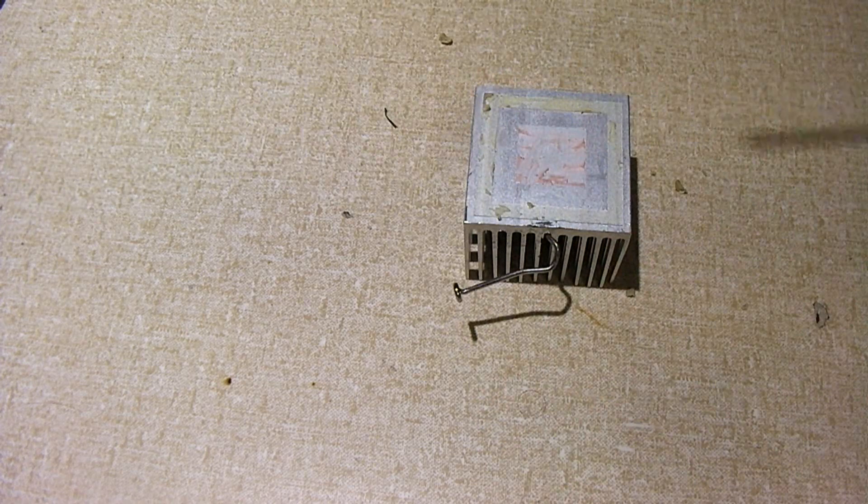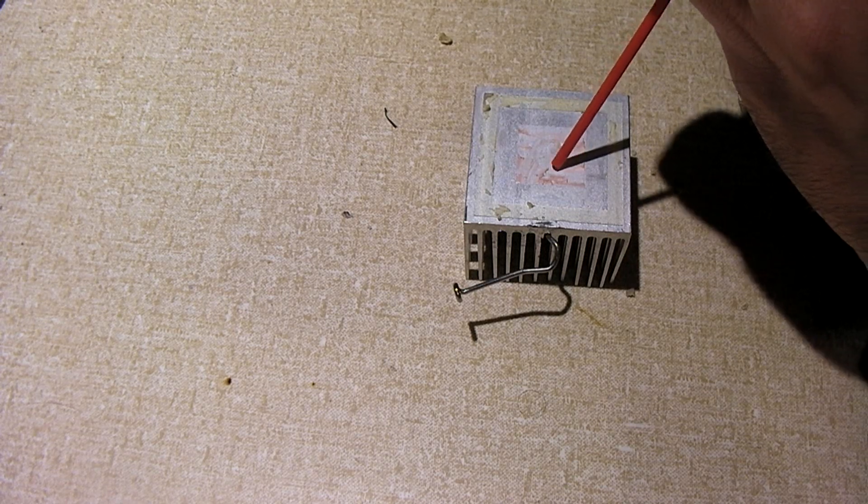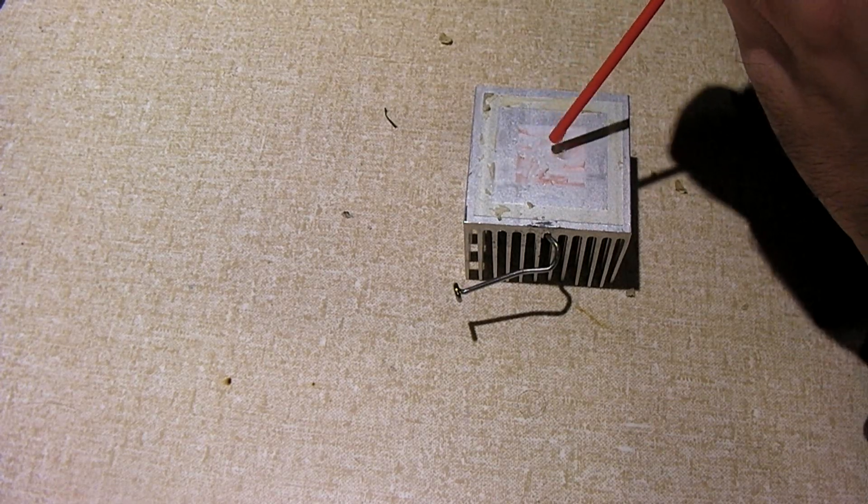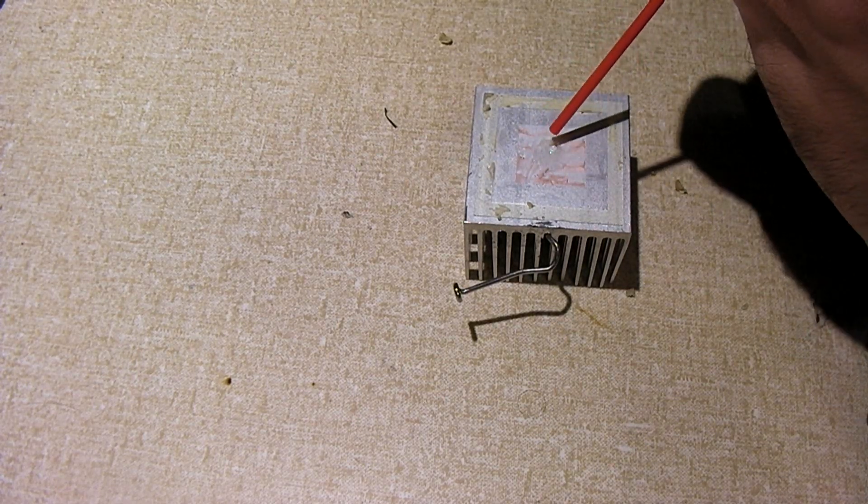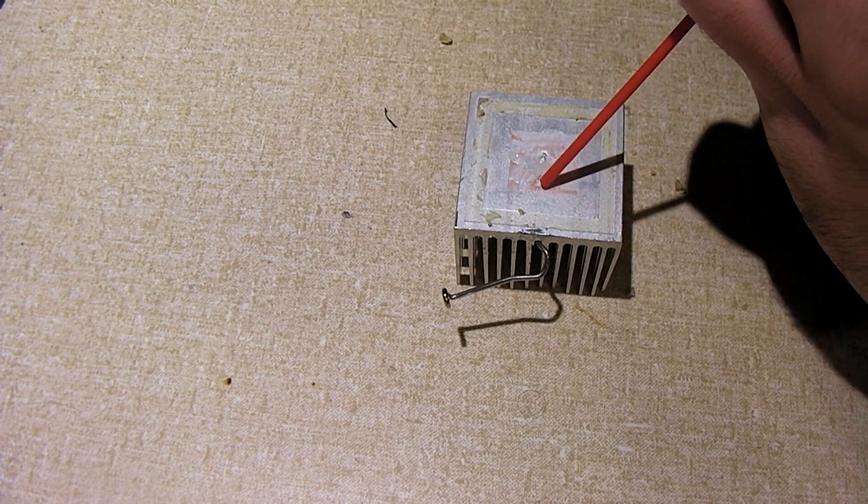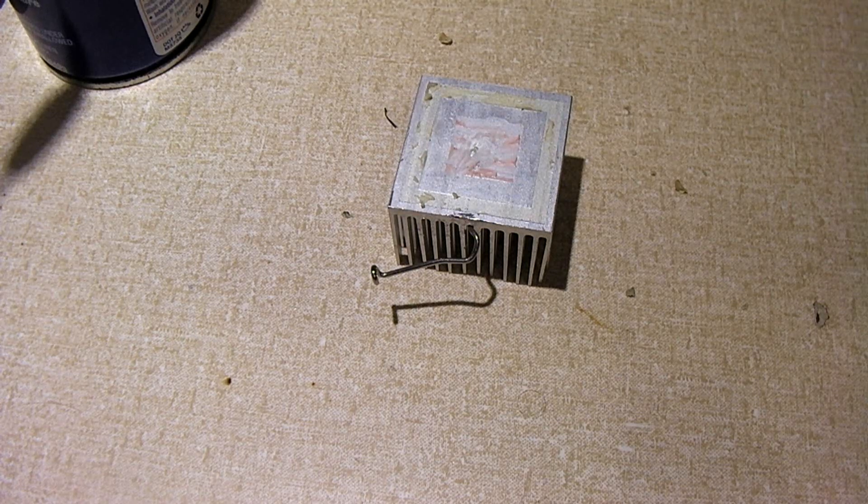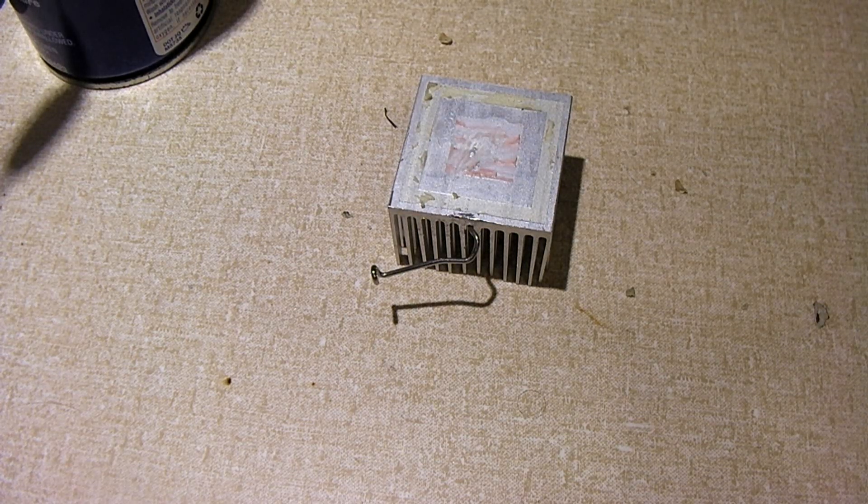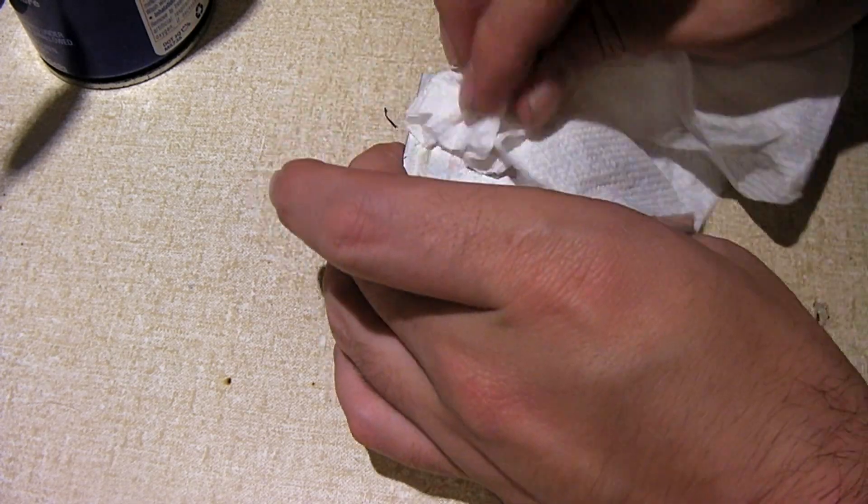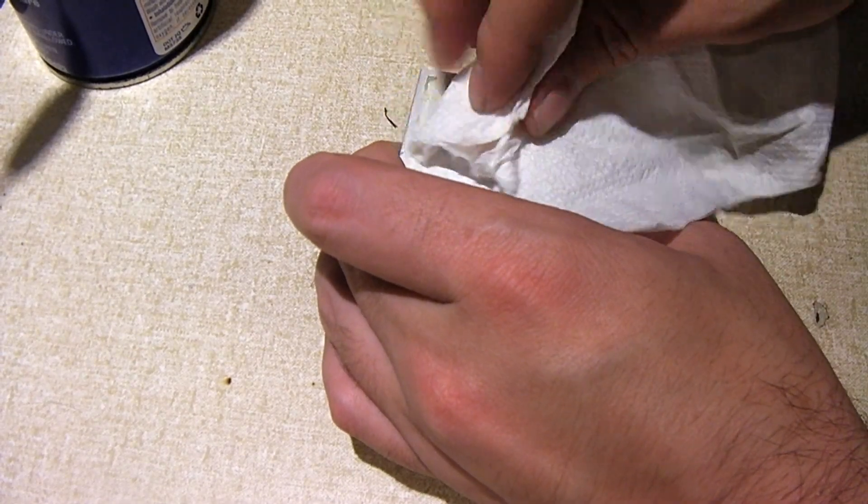I've got this can of WD-40 right here. So we're going to put just a small amount on the surface of this heat sink. Again, we don't need a whole lot. Just a little bit. Here we are. Let that sit for just a moment. Got a paper towel ready. So now, if you notice, this stuff now just comes right off.